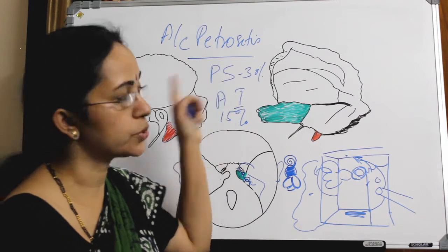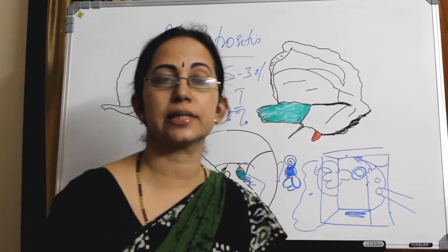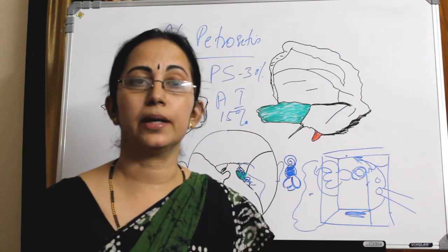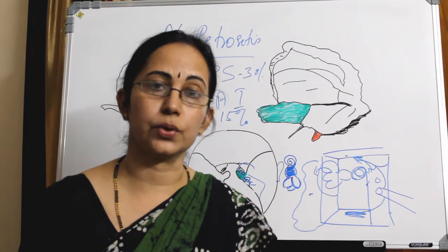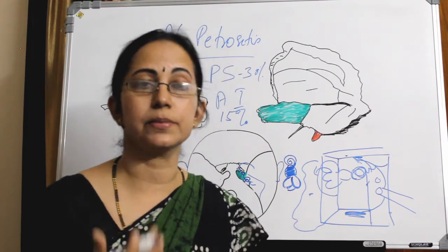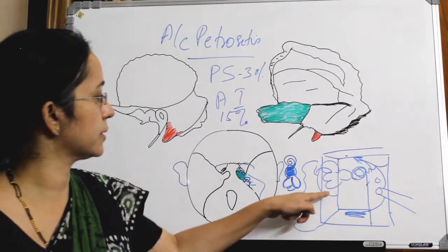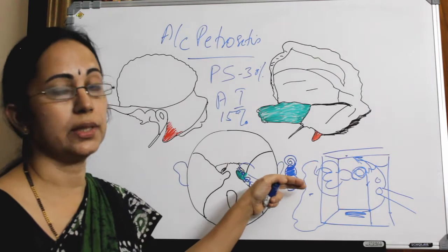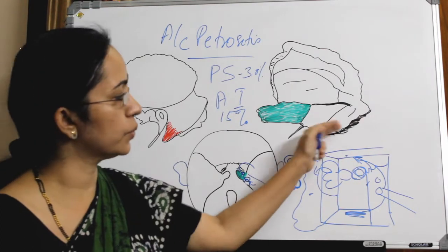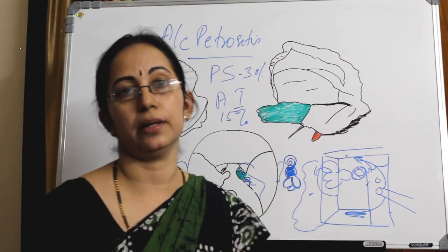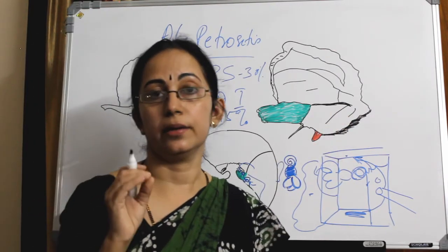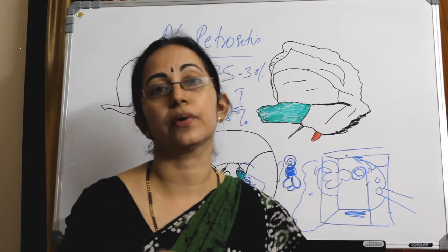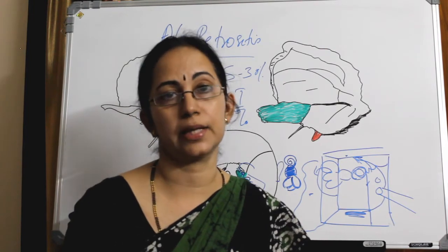And the posterosuperior air cell tract goes from the epitympanum and the mastoid, around the semicircular canals posteriorly and superiorly. The origin may be either from the attic or from Trautmann's triangle.